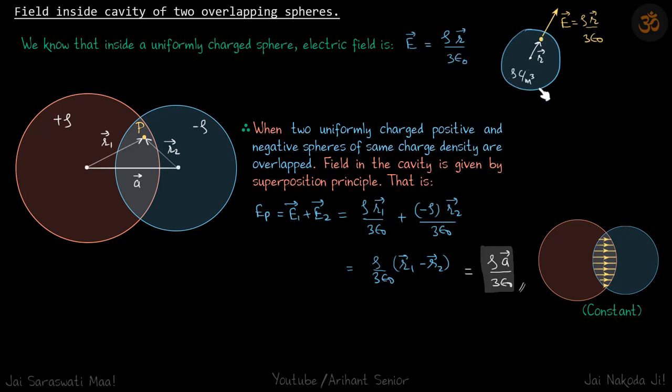Diagrammatically, you can see if we have rho coulomb per meter cube sphere, then from center, if we have a point whose position is r vector, then electric field at that point is rho r by three epsilon.